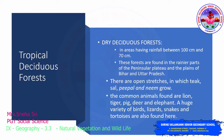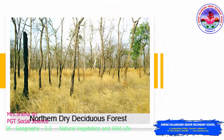Dry deciduous forests are found in areas having rainfall between 70 cm and 100 cm. Based on the amount of rainfall the areas receive, forests are classified into dry and moist deciduous. Dry deciduous forests are found in the rainier parts of the Peninsular Plateau and the plains of Bihar and Uttar Pradesh. There are open stretches in which teak, sal, peepal, and neem grow. The common animals found here are lion, tiger, wild pig, deer, and elephant. A huge variety of birds, lizards, snakes, and tortoises are also found here. On the image, you are able to see dry deciduous forest.